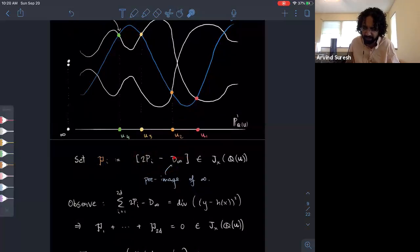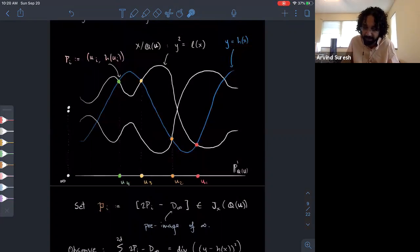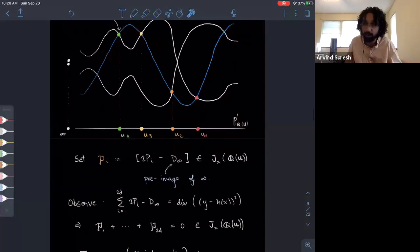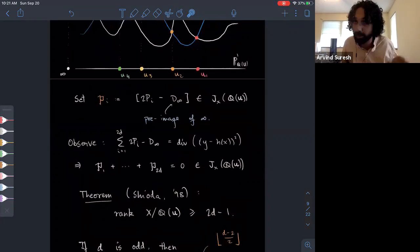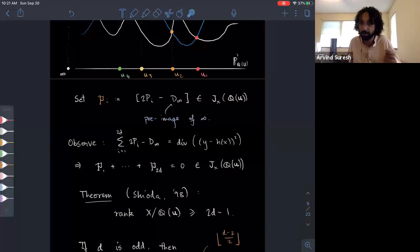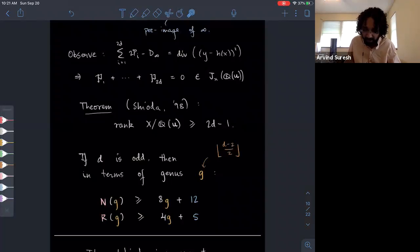Using these rational points, we can cook up rational points of the Jacobian. Here I'm going to take two times a point and I'm going to subtract this divisor at infinity, the pre-image of the point at infinity, which is not actually visible on this affine patch of this curve X. This is a degree zero divisor class, it gives you a Q of U point of the Jacobian. If you just look at, if you regard this Y minus H of X, if you regard it as a function on this curve X, then just looking at the divisor of zeros and poles of that function gives you one relation in the Jacobian between these points. Shioda actually proved that there's no further relations. So these generate a subgroup of rank 2D minus one, giving this lower bound on the rank of the generic fiber. What that means for us is you compute what the genus is in terms of the degree, and then you get these lower bounds by specialization. You get N of G is at least 8G plus 12 and R of G is at least 4G plus 5.